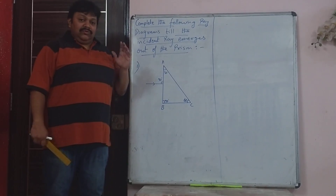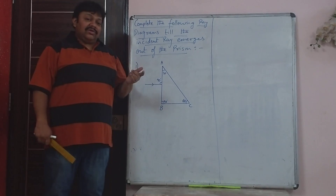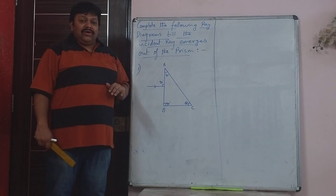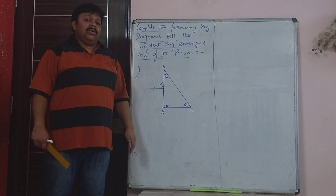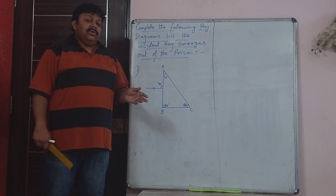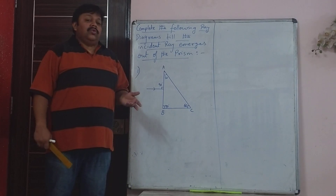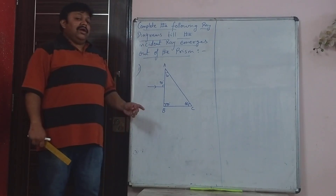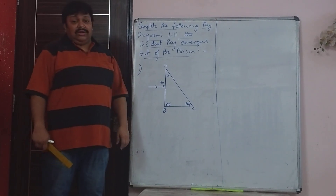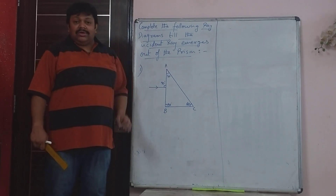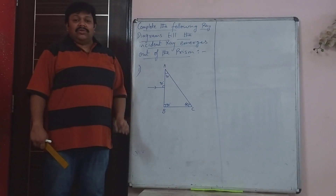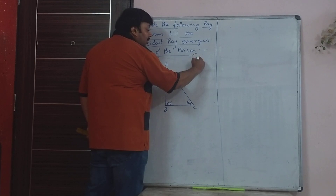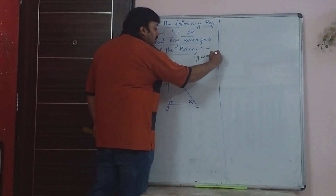Second case: if the angle of incidence is less than the critical angle, then normal refraction occurs. If the ray is travelling from denser to rarer medium it will bend away from the normal, and if from rarer to denser it will bend towards the normal. Third case: if the angle of incidence happens to be equal to the critical angle — and you need to remember the critical angle of glass is approximately 42 degrees.